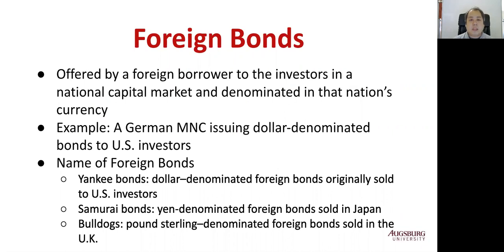There are two types of international bonds: foreign bonds and eurobonds. A foreign bond is one offered by a foreign borrower to investors in a national capital market and denominated in that nation's currency. For example, if a German firm issues US dollar-denominated bonds in the United States to US investors, that is a foreign bond in the United States.